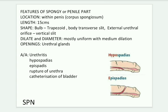Hypospadias is a condition of the penis where the urethral opening is on the underside rather than the tip, as you can see in the picture. Epispadias is a rare condition where the urethra opens on the dorsum of the penis.